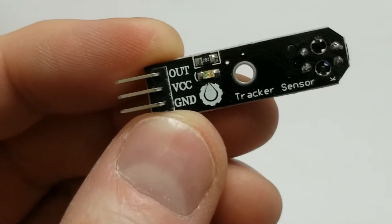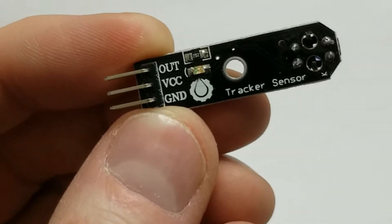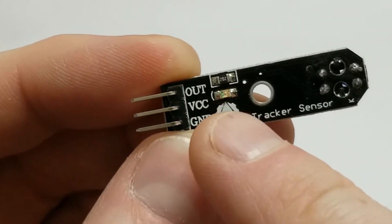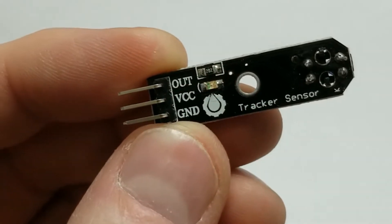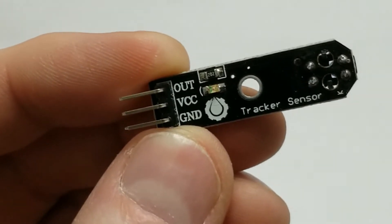The nice thing about these is they can be connected directly to the Arduino. Five volts to the VCC pin, ground to ground, and the output pin will go to one of your digital pins on the Arduino.